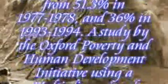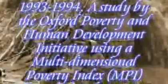According to the criterion used by the Planning Commission of India, 27.5% of the population was living below the poverty line in 2004–2005, down from 51.3% in 1977–1978 and 36% in 1993–1994.